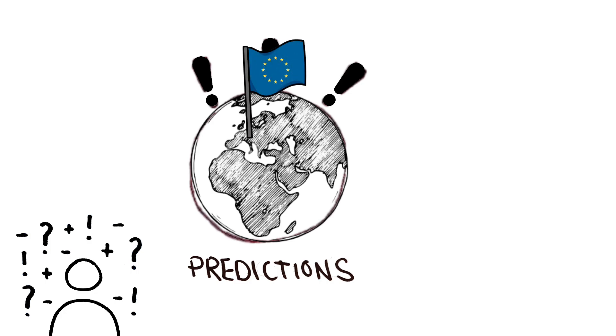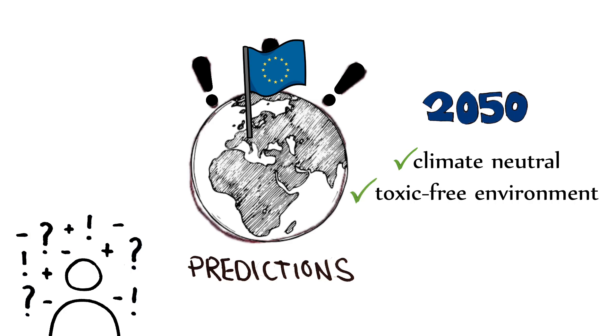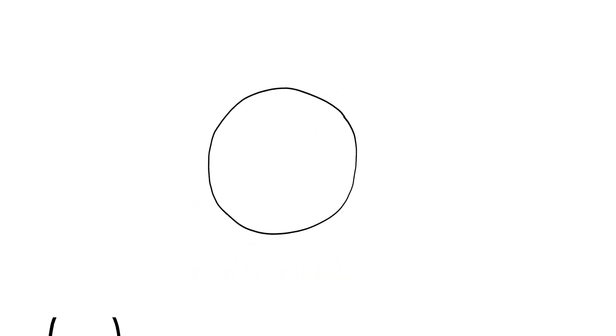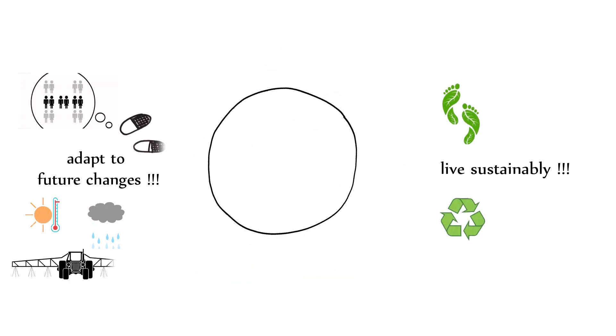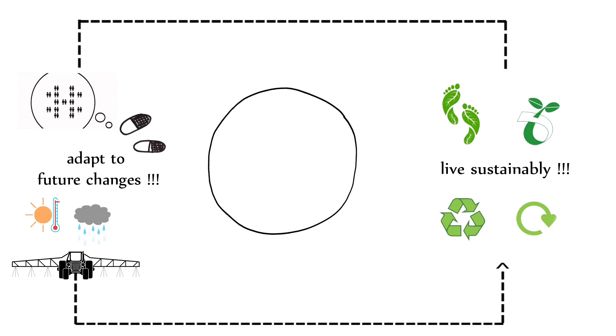The European Union wants to be the first climate-neutral continent by the year 2050, and wants a toxic-free environment. To help understand how we can achieve this, adapt to future changes, and live sustainably,